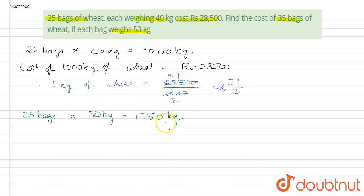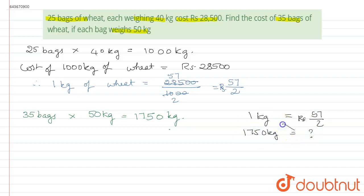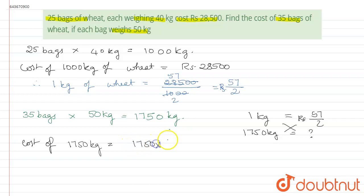Now we calculate the cost of 1,750 kg of wheat. Since 1 kg costs rupees 57/2, the cost of 1,750 kg equals 1,750 × 57/2 rupees. We cross-multiply to get the total cost.